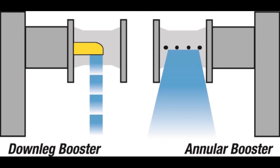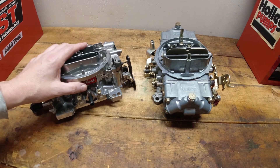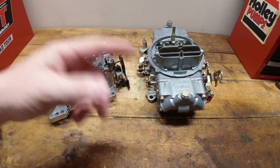There are two types of boosters: the down leg style and the annular style. The down leg is best described as a garden hose — you turn it on and a lot of fuel goes directly out of the nozzle into the airstream. The annular style is more of a spray, delivered in a pattern into the airstream through the booster. I'm going to show you the difference between the two in a demonstration, so let's move over to the other bench.